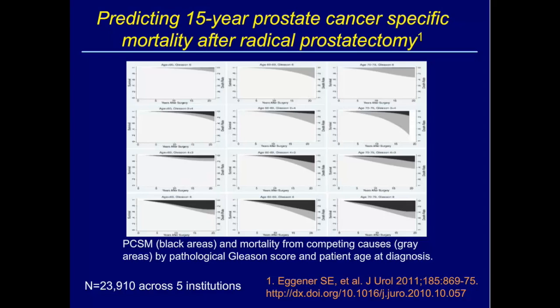Even small amounts of high-grade pattern portend increased risk of biochemical recurrence. In a large study of almost 24,000 patients across five institutions looking at survival, if you have a Gleason 6 or below tumor — Gleason scores 2 to 6 — the survival is absolutely excellent, with the black line representing prostate cancer-specific mortality across all age groups. As you add progressively more pattern four and five, that's where the trouble starts.